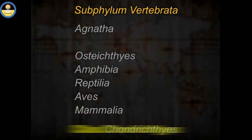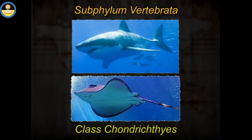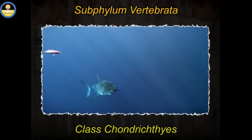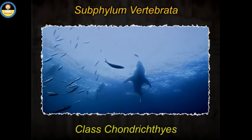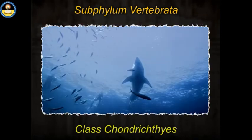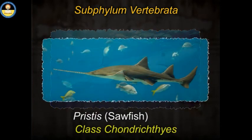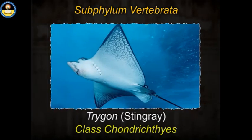Chondrichthyes — these are sharks and rays. The skeleton is completely cartilaginous. The body is streamlined and the tail helps in propulsion. Examples: Scoliodon (Indian shark), Pristis (sawfish), and Trygon (stingray).